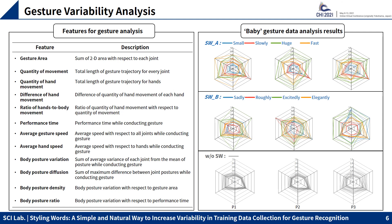From the study of Batavu, we obtained useful features for gestures. However, those features were not a perfectly fit for our data because of dimensionality, so we redefined them as shown on the slide. In the right figure, we show the differences among gestures with styling words type A, styling words type B, and without styling words. Each vertex of the hexagon represents: gesture area, quantity of movement, performance time, average speed, body posture variation, and body posture ratio.